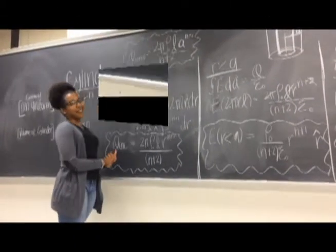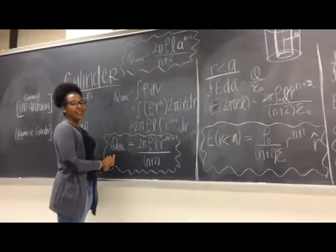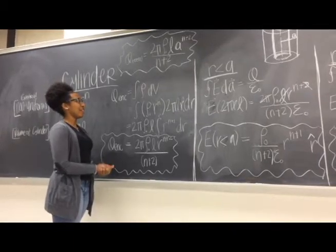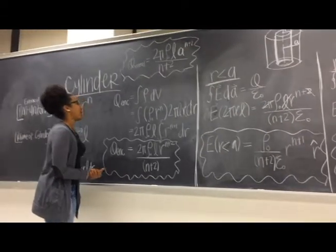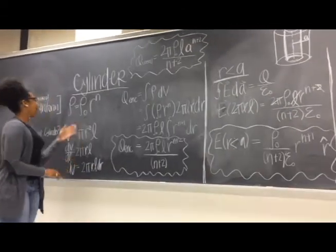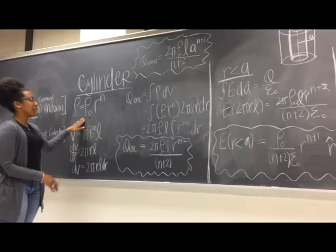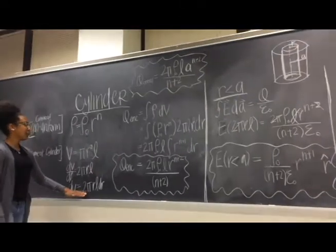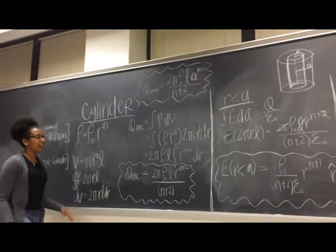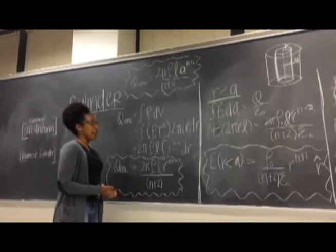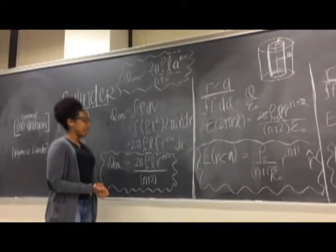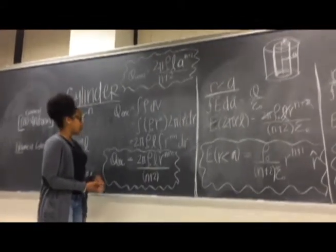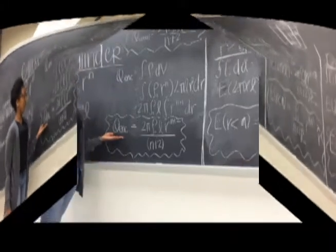We know that the charge density is the integral of rho dV. When we substitute in the equation for rho and the equation for dV, we then take the integral with respect to dr, from which we can formulate the equation.